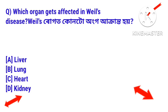Question: Which organ is affected in Weil's disease? Weil's disease is caused by bacteria that spread through animals and infect humans through contact, ultimately affecting the kidneys of the human body.